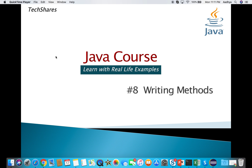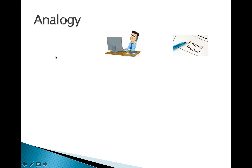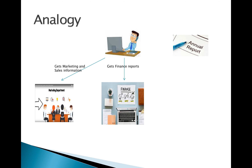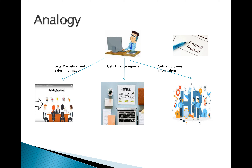This session is on writing methods. Before we understand how to write methods, let's talk about why we need methods with an analogy. Let's say the managing director of a company wants to prepare an annual report. For that, he basically needs details from other departments - marketing, sales, finance, and HR information like how many employees are in the company.